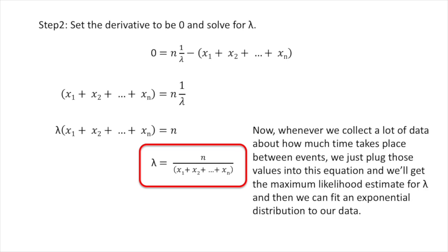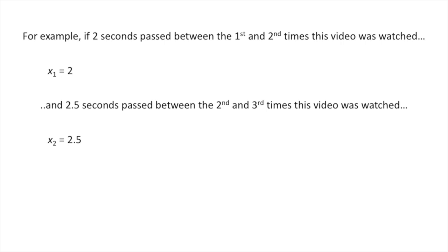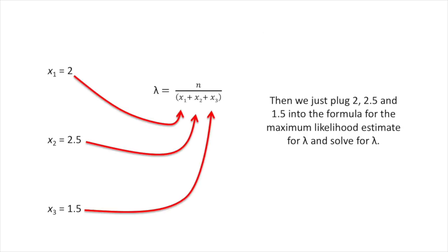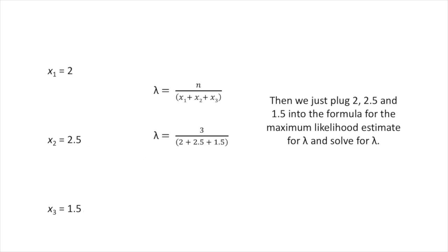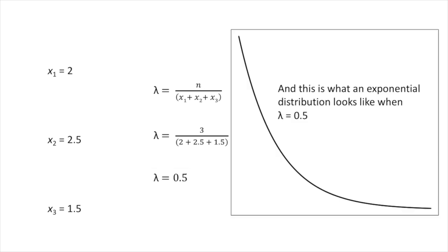Whenever we collect a lot of data about how much time takes place between events, we just plug those values into this equation and we'll get the maximum likelihood estimate for lambda, and then we can fit an exponential distribution to our data. For example, if 2 seconds passed between the first and second views, then x sub 1 equals 2. If 2.5 seconds passed between the second and third views, then x sub 2 equals 2.5. If 1.5 seconds passed between the third and fourth views, then x sub 3 equals 1.5. Plugging 2, 2.5, and 1.5 into the formula, the maximum likelihood estimate for lambda is 0.5. And this is what an exponential distribution looks like when lambda equals 0.5.